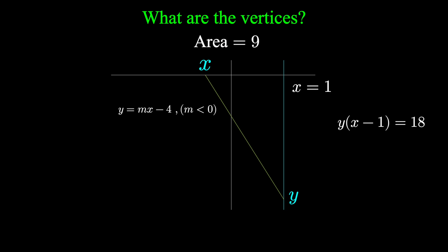We also don't know the slope of this slanted line other than it's negative. However, this line does have a y-intercept of negative 4 and somewhere it has to intersect the line x equals 1.